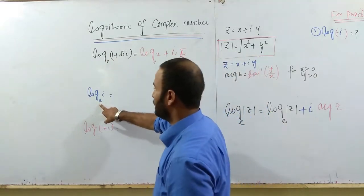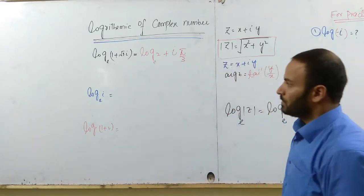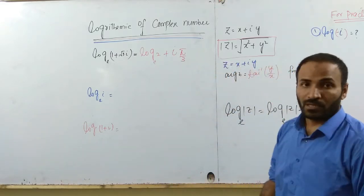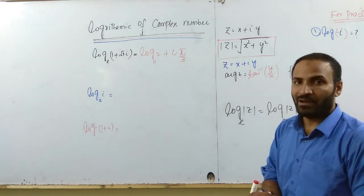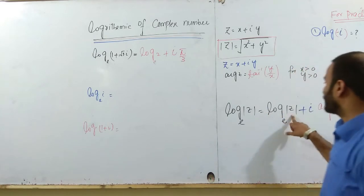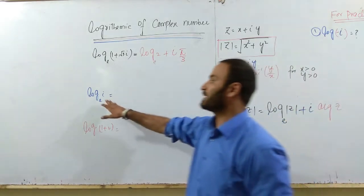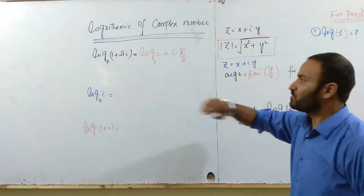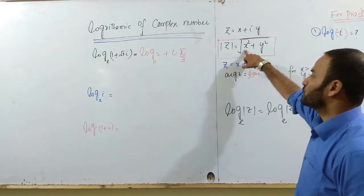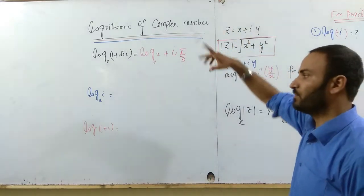The next question is log of complex number iota. Again, if you want to find out the logarithm of iota, you have to find two things: magnitude and argument. What is the magnitude of this complex number? There is a simple iota. Real part is 0, coefficient is 1. 0 squared, again 0. 1 squared is 1. 0 plus 1 is 1, square root of 1, again 1.